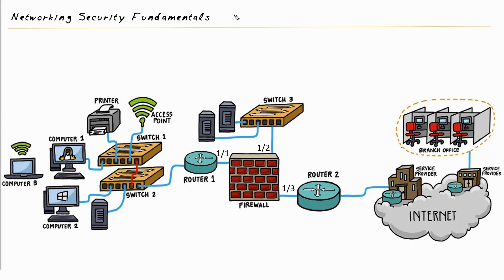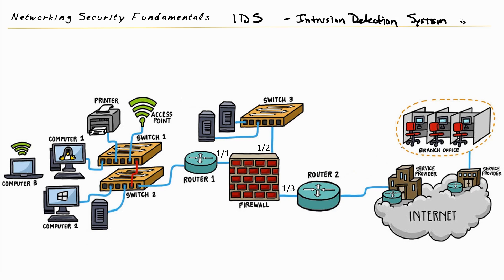To help us identify and protect against attacks in our network, we can use a set of technologies known as IDS — Intrusion Detection Systems — and IPS, which is Intrusion Prevention Systems. Let's start with the acronym IDS, and a key element here is the word 'detection.'